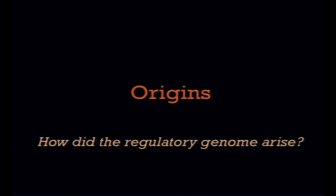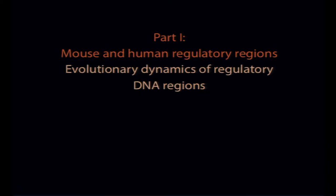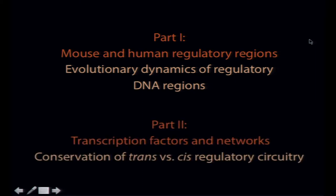Now I want to turn to the question of where did this all come from — how did the regulatory genome arise? I'll divide the rest of the talk into two parts. First, I'll talk about mouse and human regulatory regions defined by DNase I hypersensitive sites and a bit about the evolutionary dynamics shaping that landscape. Second, I'll talk about transcription factors and networks, particularly looking at the relationship between conservation of trans versus cis regulatory activity.